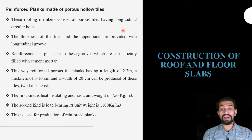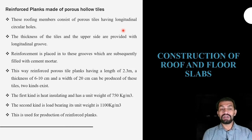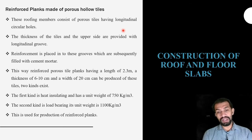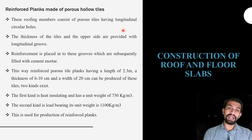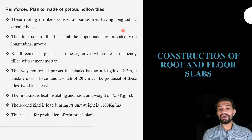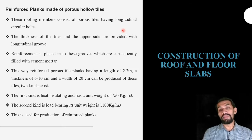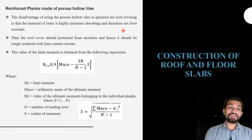The reinforced porous tile planks have a length of 2.3 meters, a thickness of 6 to 10 centimeters, and a width of 20 centimeters. There are two kinds: the first is heat insulating with a unit weight of 750 kg per cubic meter, and the second is load bearing with a unit weight in the range of 1100 kg per cubic meter. These are used for the production of reinforced planks.